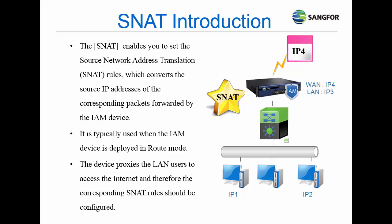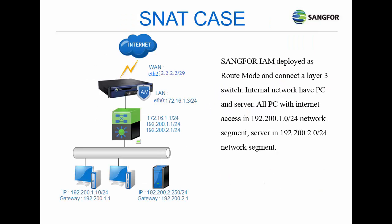SNAT is typically used when the IAM device is deployed in routed mode. The device proxies LAN users to access the internet, and therefore the corresponding SNAT rule should be configured. In this example, IAM is deployed as routed mode and connected to a Layer 3 switch. The internal network has PCs and servers, with all PCs having internet access in the 192.200.1.0/24 network segment.